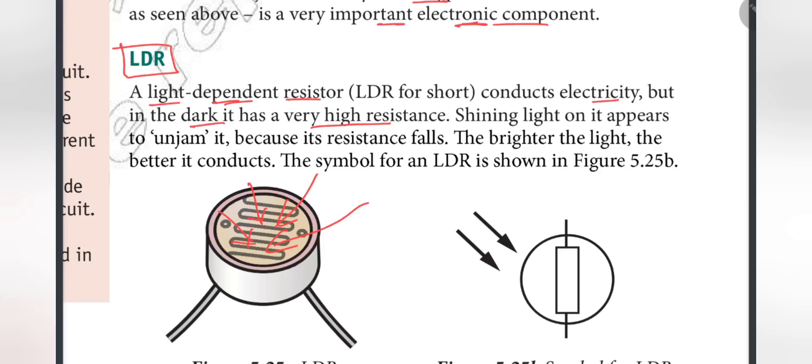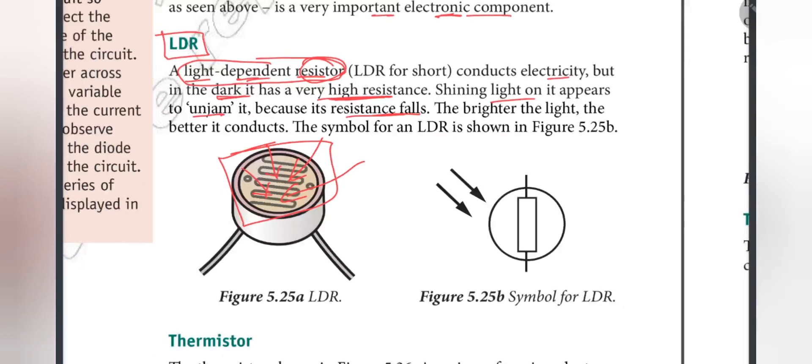The light is the same, but the resistance is the same. The light is the same as the resistance is high. Shining light on it appears to unjam it because its resistance falls. The brighter the light, the better it conducts.